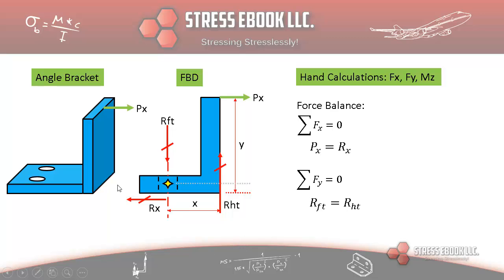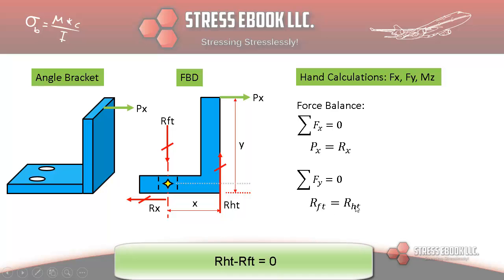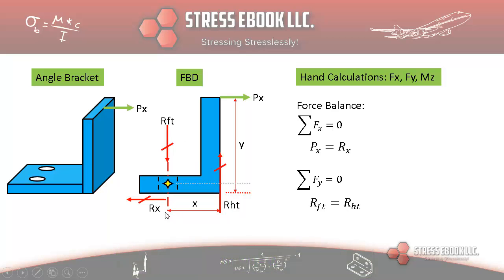And so I like that way of doing it. But again, it doesn't mean that's the only way to do it. This is the other way to do it if it's acceptable to the approving authorities. All right. So what we have here is sigma FY equal to zero. Therefore, RFT is equal to RHT because RFT minus RHT is equal to zero to satisfy this equation of equilibrium.